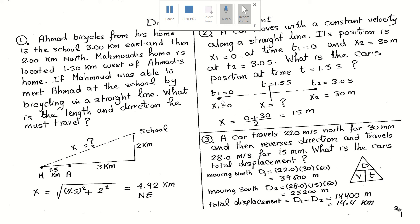This is pretty easy. I have three positions. The first position: x1 equals 0 when t1 equals 0. The second position: x2 equals 30 meters at 3.0 seconds. We have a location somewhere in between at 1.5 seconds — right in the middle. So you calculate 0 plus 30 meters divided by 2, which is 30 divided by 2, giving 15 meters.